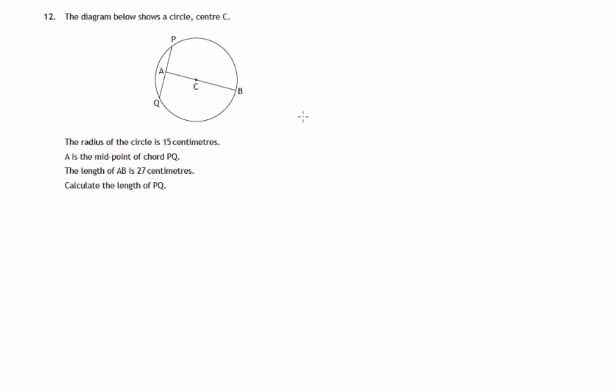This is question 12 from paper 1 of the 2014 National 5 Maths exam. Given a circle, chord PQ and the midpoint of that chord and the line through the centre from that out to the other side of the circle.